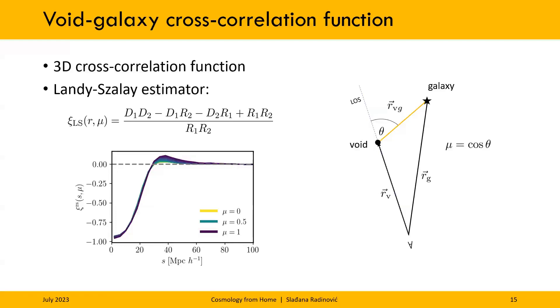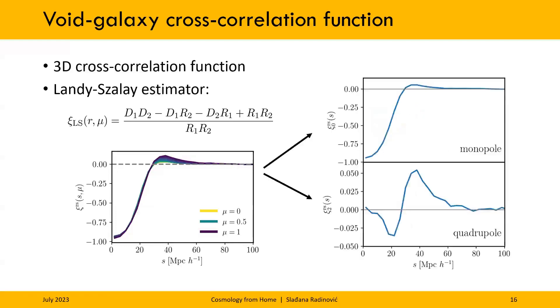An easier way to see this is decomposing this cross-correlation function into multipoles. This gives us a monopole, which shows the average galaxy density around voids, basically, and a quadrupole, which shows deviations from a spherical shape. So if this was in real space, that quadrupole would be consistent with zero. But since it is not, it has a very distinct shape.